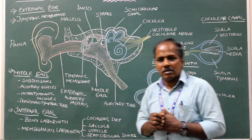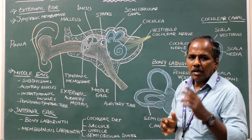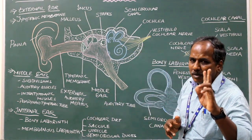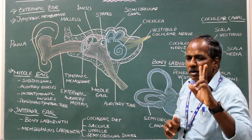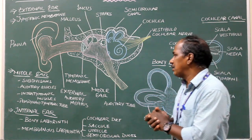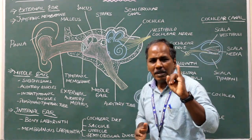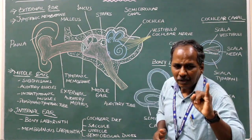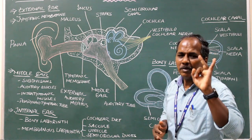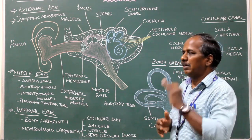Intratympanic muscles. There are two intratympanic muscles: number one, tensor tympani; number two, stapedius.